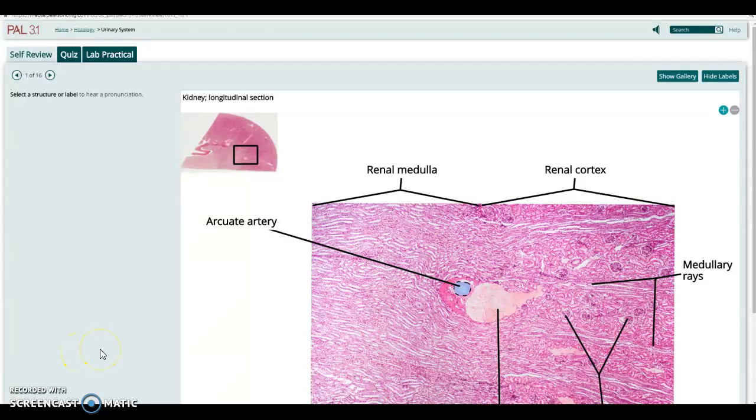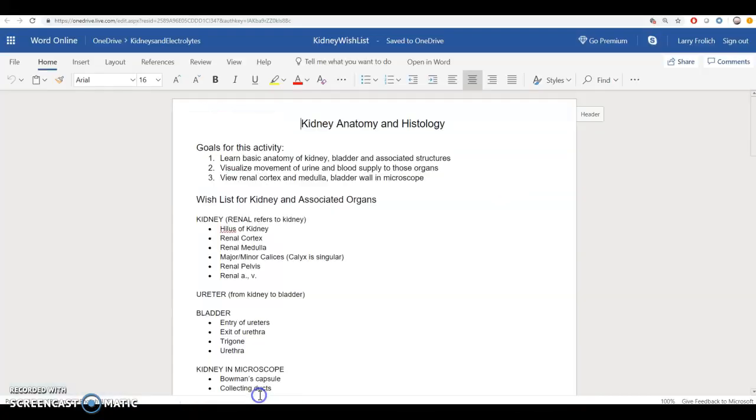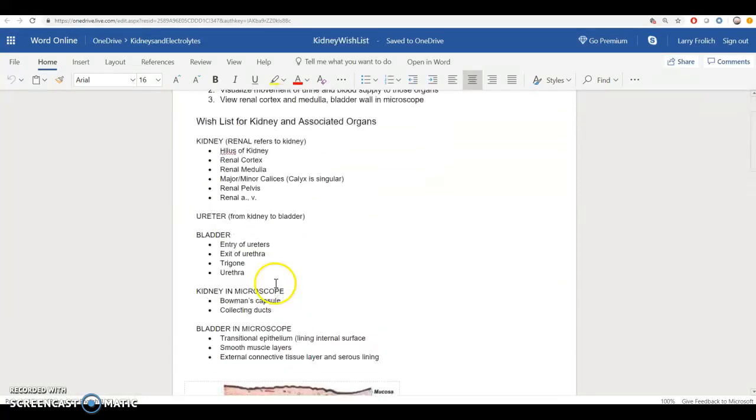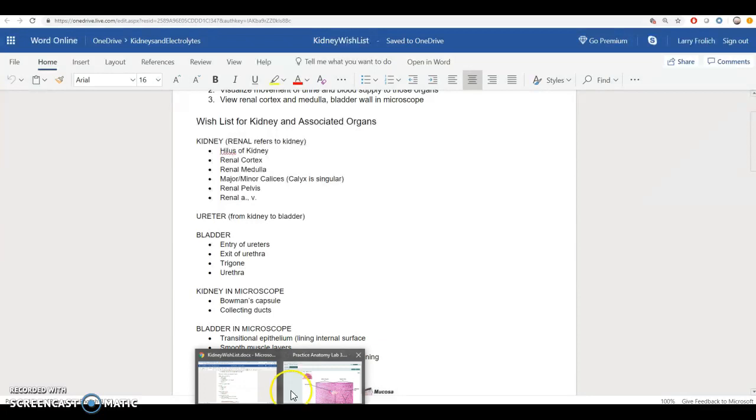All right, anatomy and physiology students, just a quick review of the tissues of the urinary system or the kidney and bladder and ureter. Just a reminder, when you're doing this, be sure that you're also on the course website getting that kidney wish list where you can see everything that you should know. There's also probably some images there for you as well.